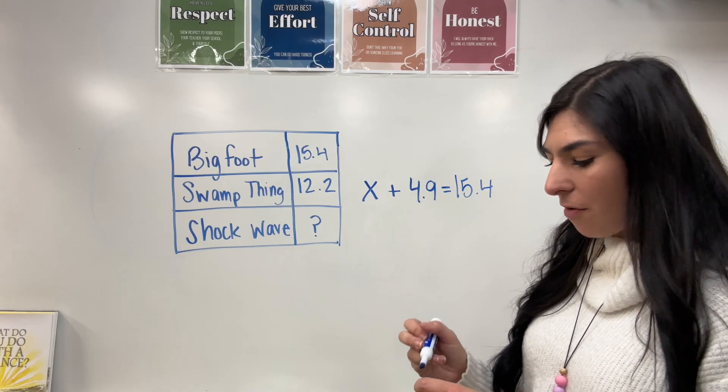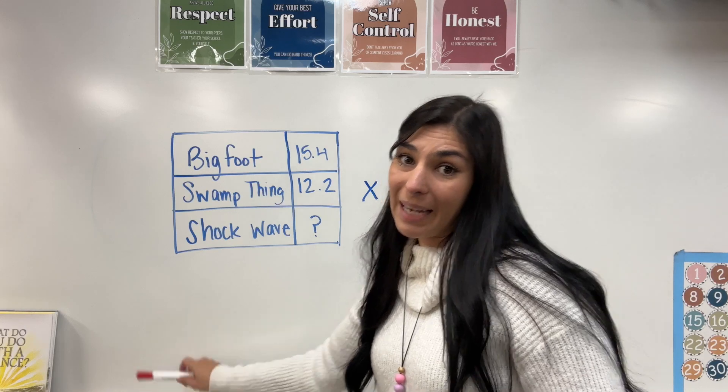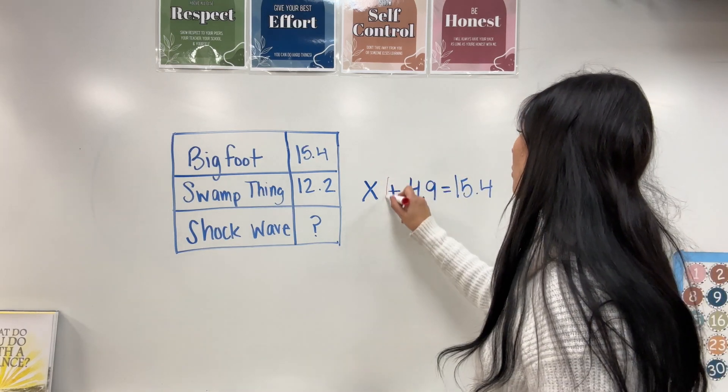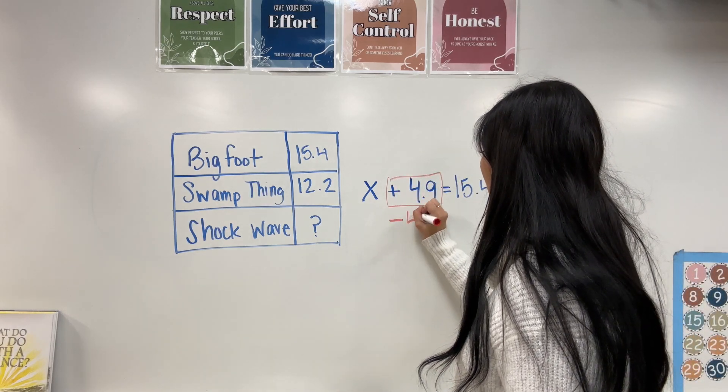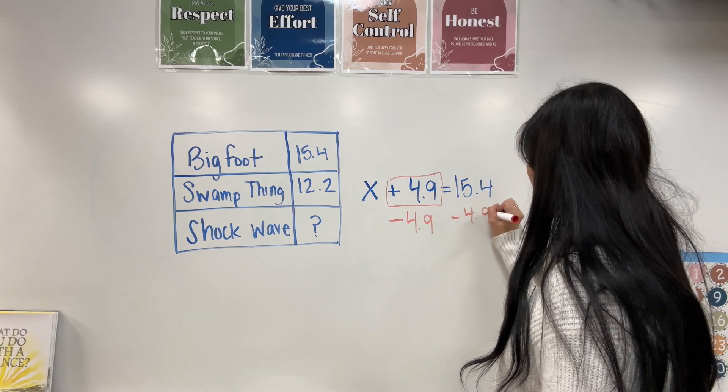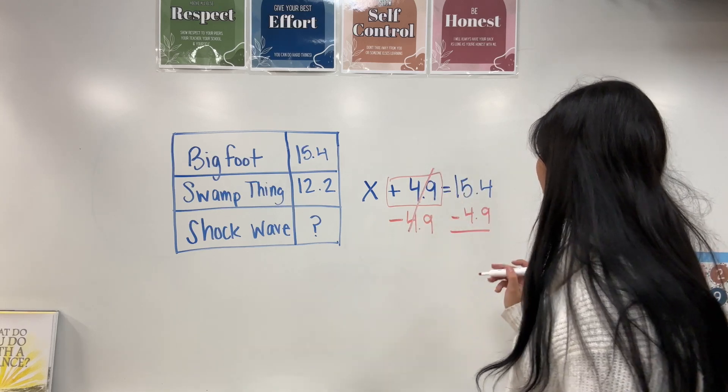Now we're going to have to solve. So our operation is addition, meaning I need to do the inverse operation, which is the opposite, which is subtraction. So plus 4.9 minus 4.9 on both sides. This gets to cross out. And this one we solve.